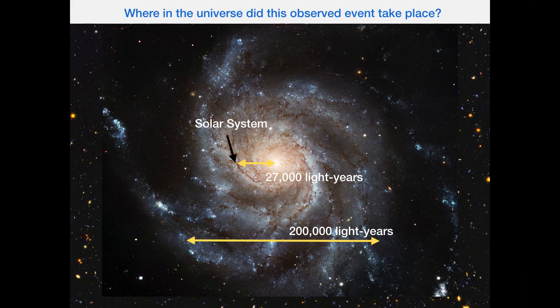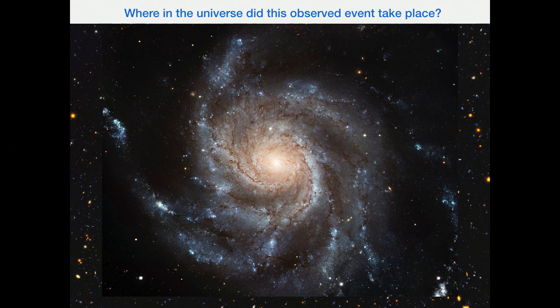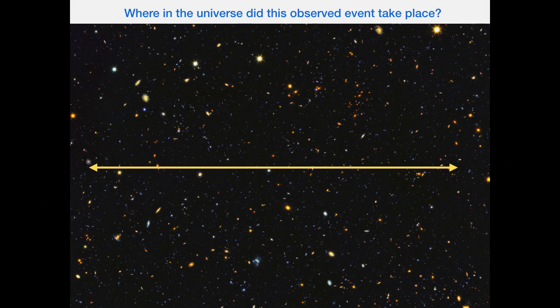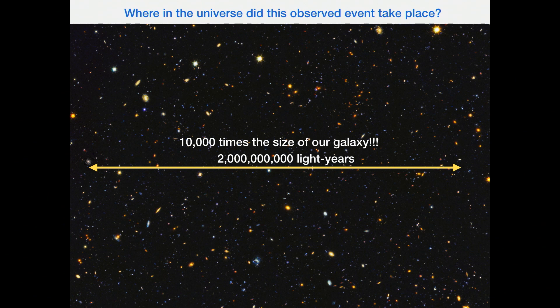It's an interesting question: where in the universe did this observed event take place? Our solar system is roughly 27,000 light years from the center of our galaxy, which is roughly 200,000 light years across. It turns out we need to zoom out a lot — the event actually happened 2 billion light years away, which is 10,000 times the size of our galaxy. This means the event happened 2 billion years in the past. And LIGO detected it roughly one month after the experiment was turned on — somehow 2 billion years ago, this event happened just in time for this apparatus to detect it.